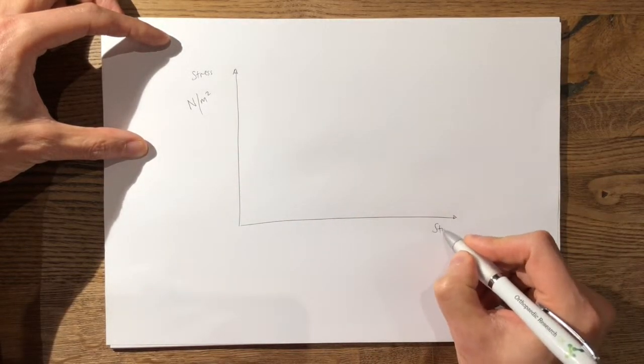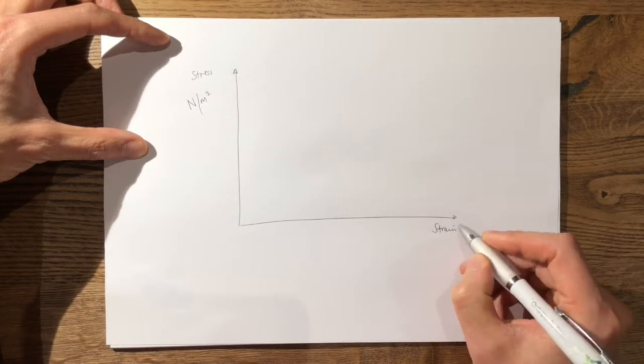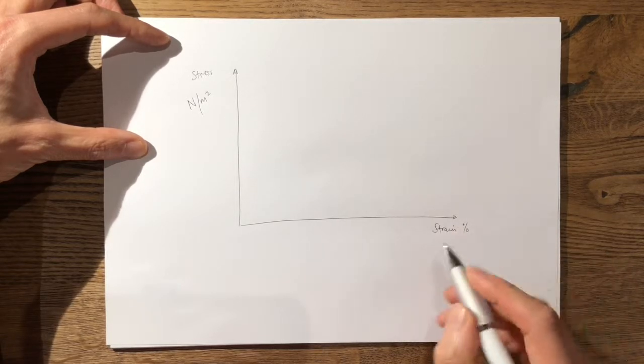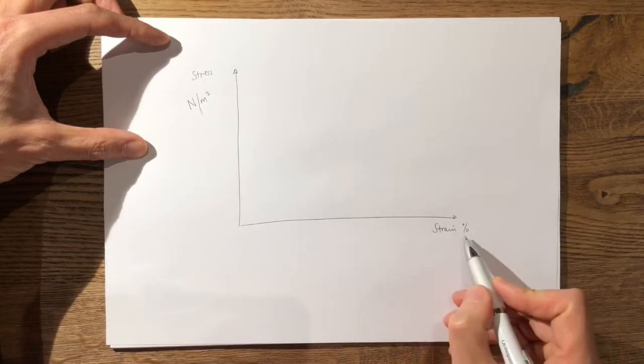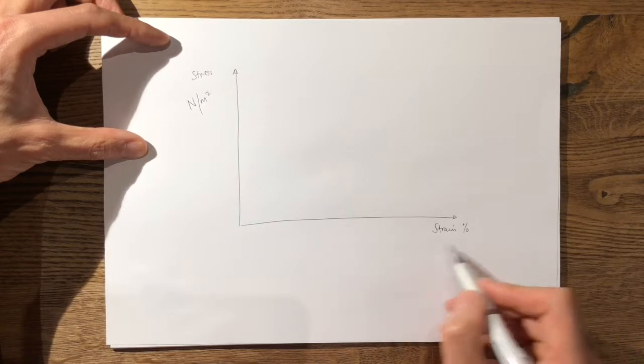On the x-axis you have the strain which is usually illustrated as a percentage or defined as the change in length of the material over the original length.